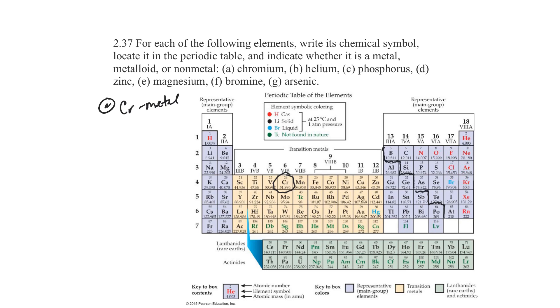B says helium. Helium is here. Helium is HE. It's to the right of the stairs, so it's a non-metal.